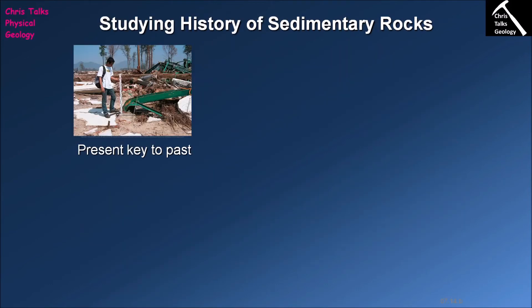The final thing to think about is how the study of sedimentary rocks helps us understand Earth history. We have the principle of uniformitarianism, which at its most simple level states: if it's happening now, it happened in the same way in the past. This is why sedimentary geologists go to modern sedimentary environments, look at the sediments found there, and come up with a set of criteria for each environment — what kind of sediment, sedimentary structures, and fossils we'd expect to see.